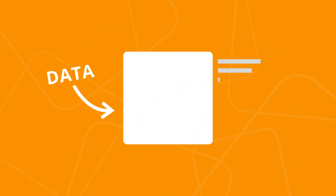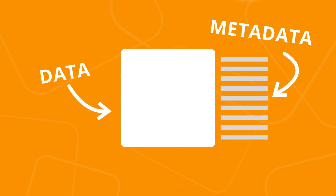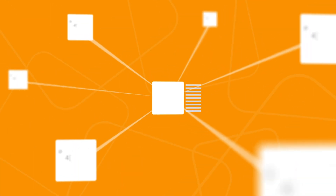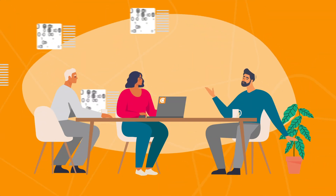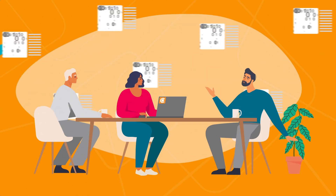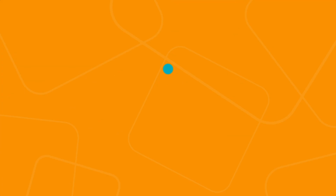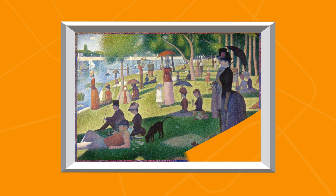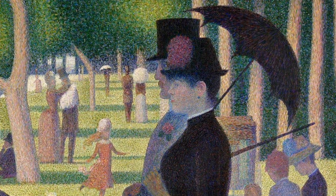More than just data about data, metadata is the context that gives information a richer identity and forms the foundation for its relationship with other data. It can also be a helpful tool that saves you time, keeps you organized, and helps make the most of the files you're working with. Let's paint a picture to explain what metadata is, how it works, and why it really matters.